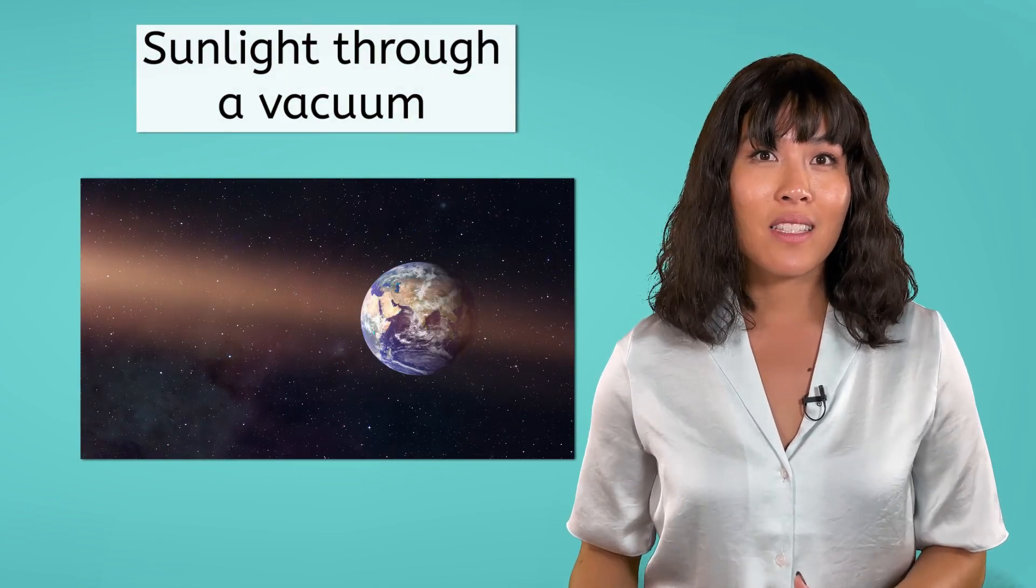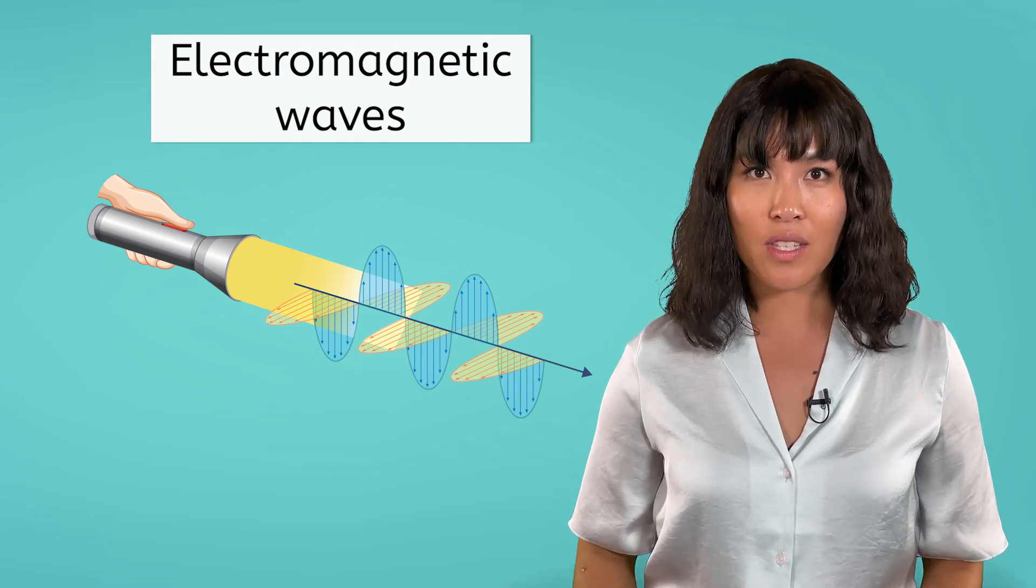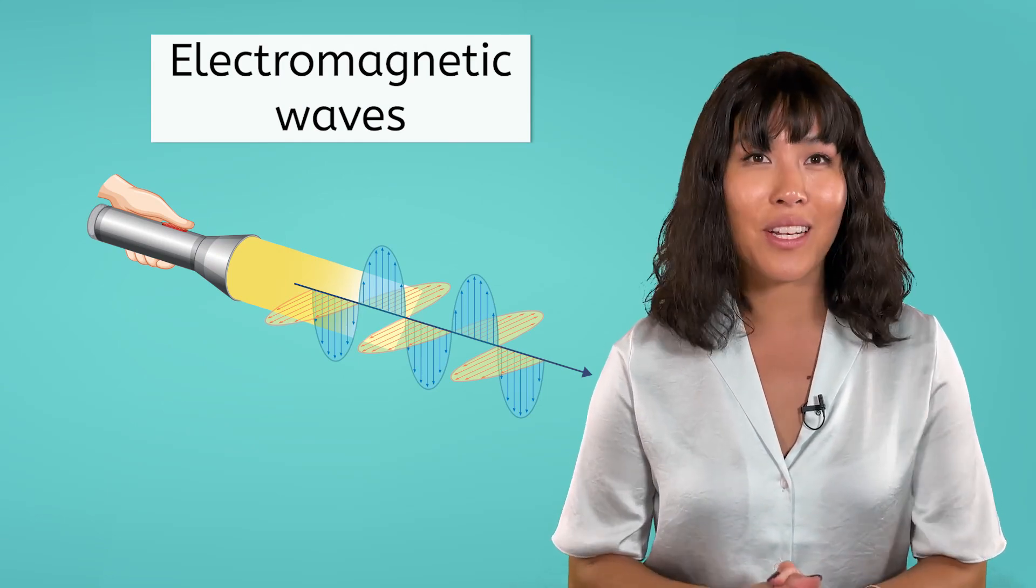The last method of heat transfer is radiation. This is how the sun is able to transfer heat to Earth. Unlike conduction and convection, radiation does not require any matter at all to be transferred. It can go through empty space, sometimes called a vacuum. This type of heat transfer occurs through electromagnetic waves, which you will learn more about later in the course.